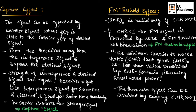If the carrier-to-noise ratio is less than 1, then the FM signal is corrupted by noise and the FM receiver will break down. This effect is known as threshold effect. This is about capture effect and threshold effect.